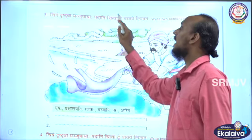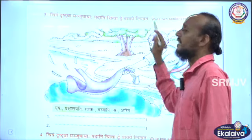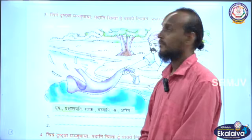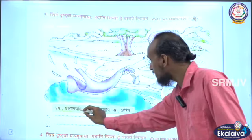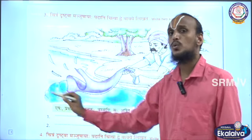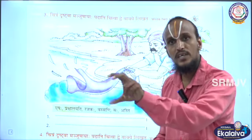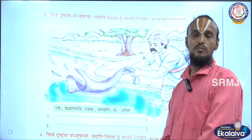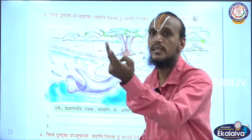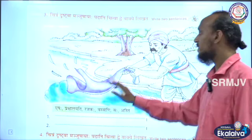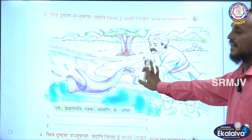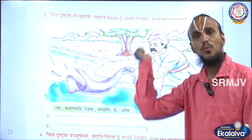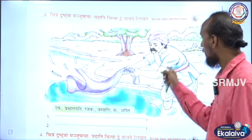Chitram drishtuva Manjusha yaha padani chitva dwe vake likhata. What does that mean? Chitram drishtuva means after seeing this picture. Manjusha means clue box. So after seeing the picture, with the help of the clue box, Dwe vake likhata — you have to make two sentences in Sanskrit. See the picture — it is a river scene. On the river shore, a washerman is washing cloth.